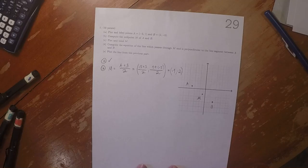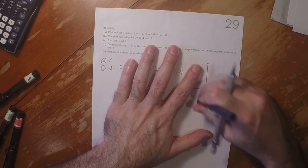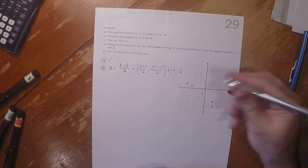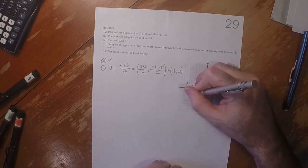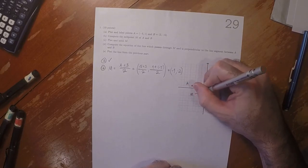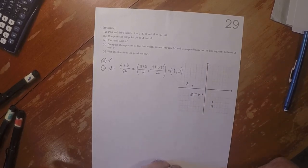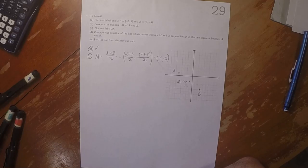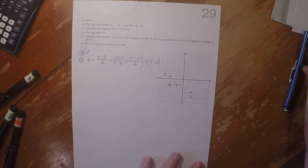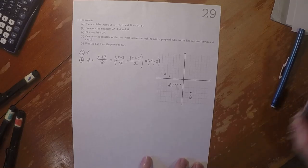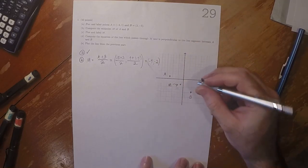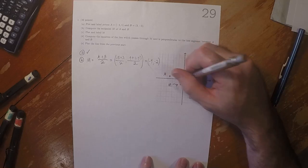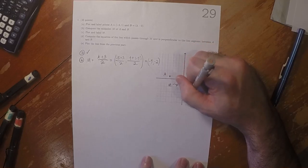Compute the equation. Oh, so we're going to have to draw through there. Compute the equation of the line which passes through M and is perpendicular to the line segment between A and B. So we can calculate the slope through A and B because that will be the same as the slope through, for example, M and B.